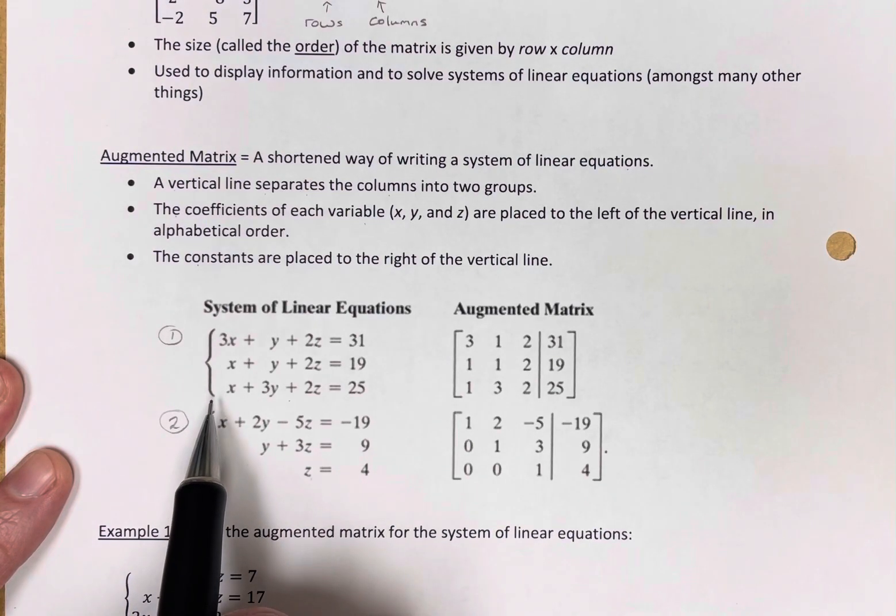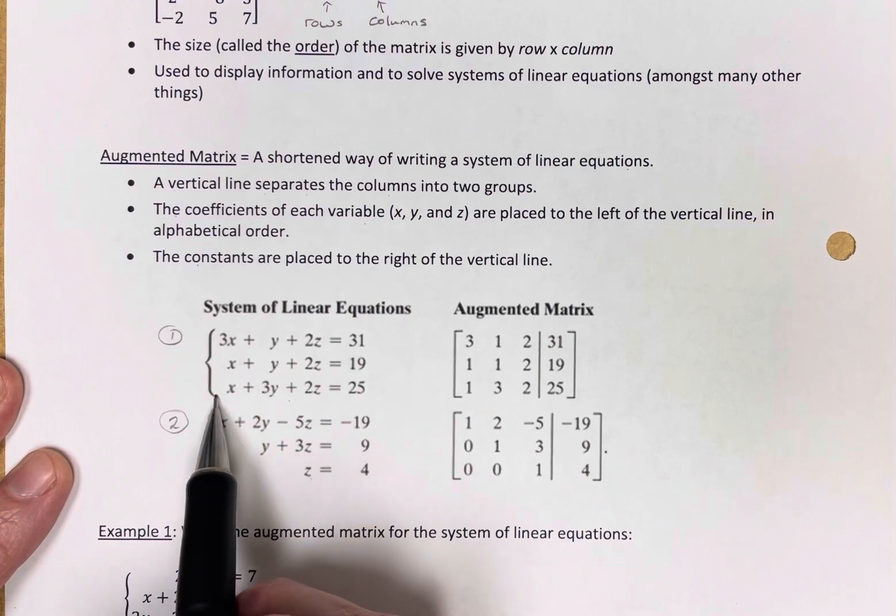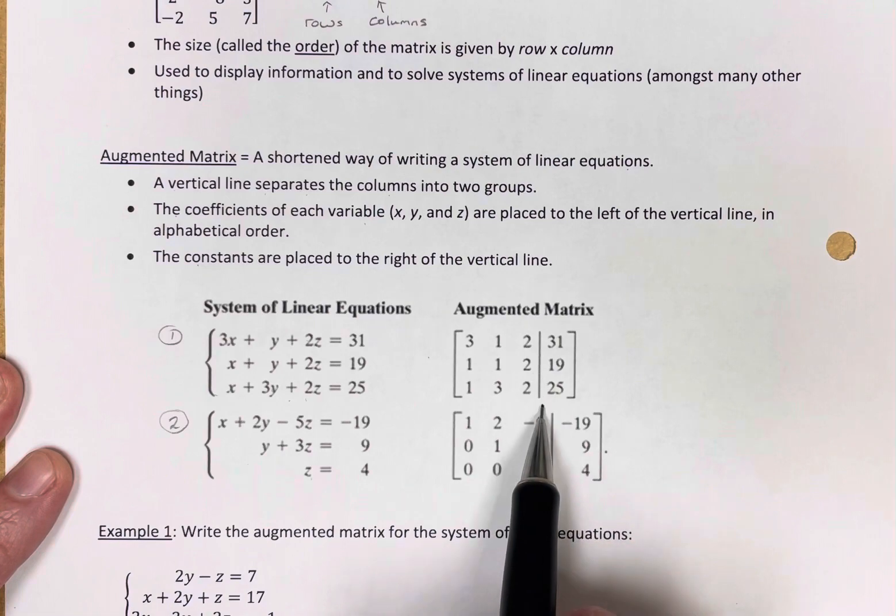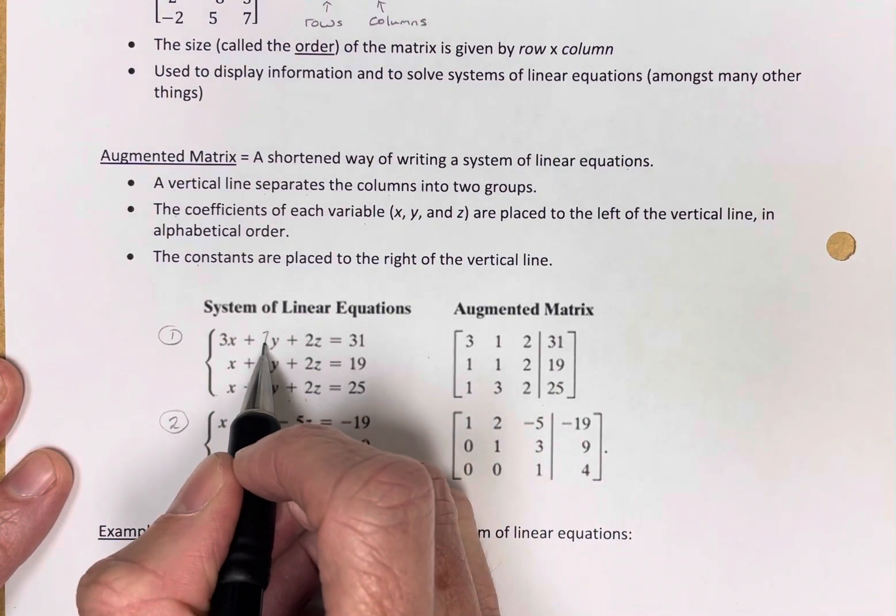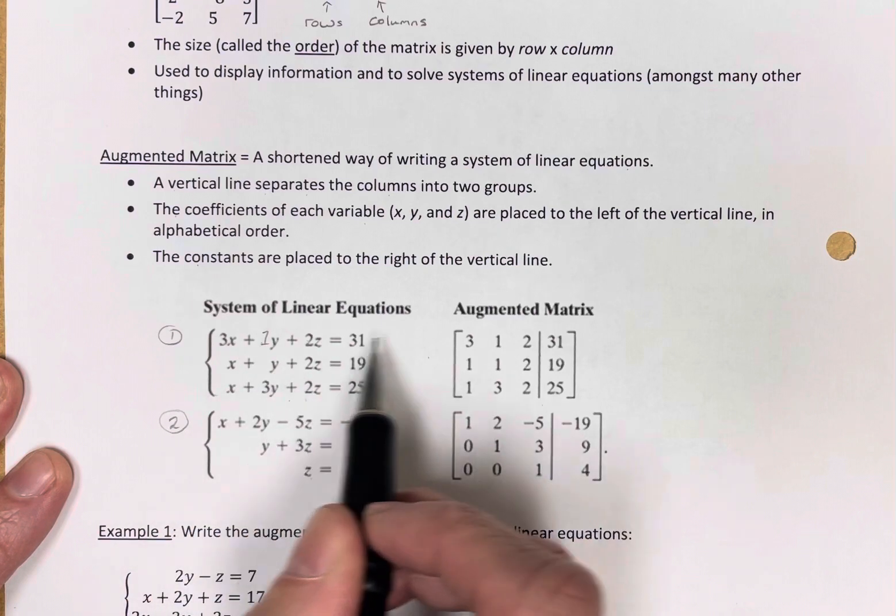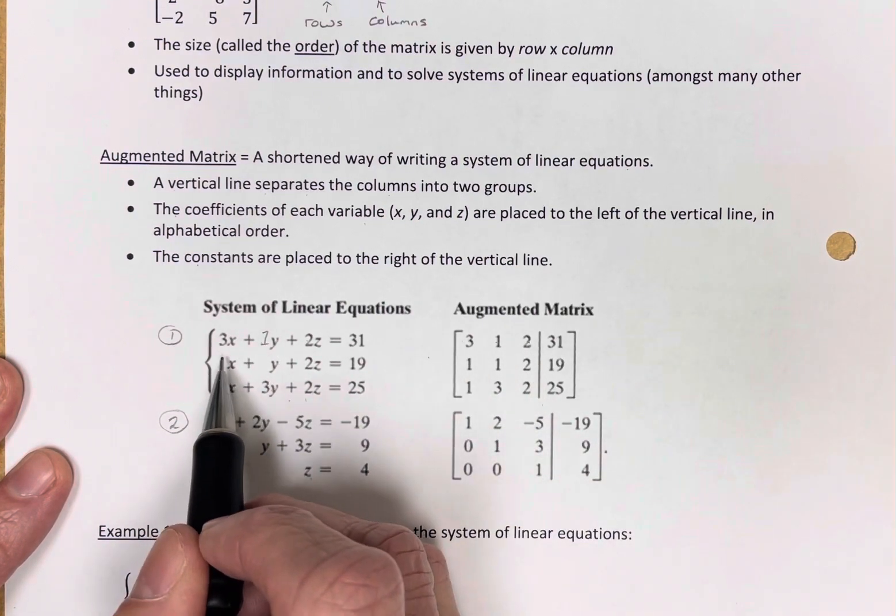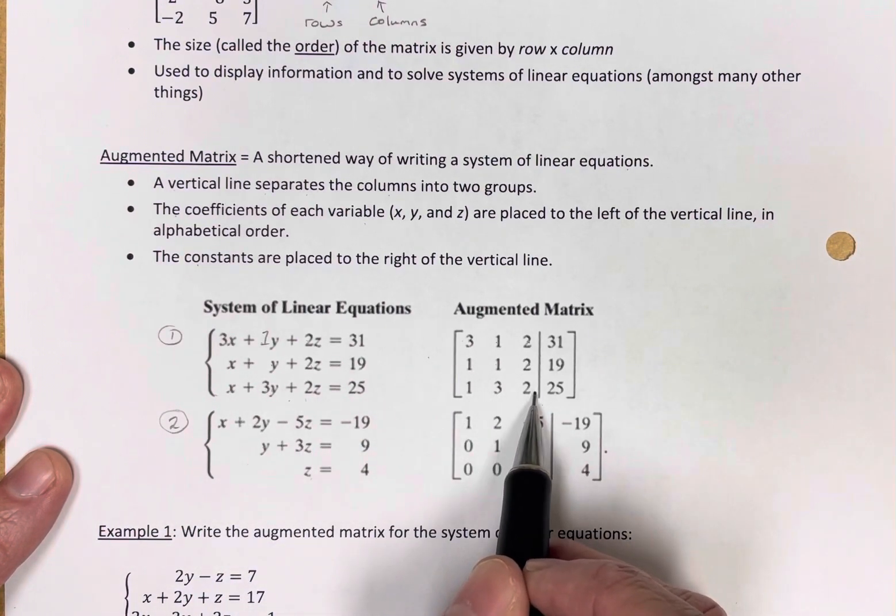The augmented matrix, we're going to use brackets. The coefficients of our variables go to the left of the vertical line. Three, one, two; one, one, two; and one, three, two for x, y, z.